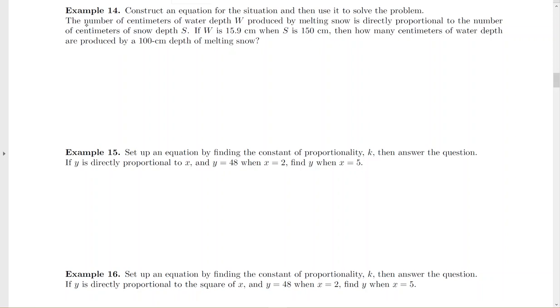So for this one, the number of centimeters of water depth W produced by melting snow, so we're going to start out with W equals directly proportional to the number of centimeters of snow depth S. So from here, we're trying to find K.